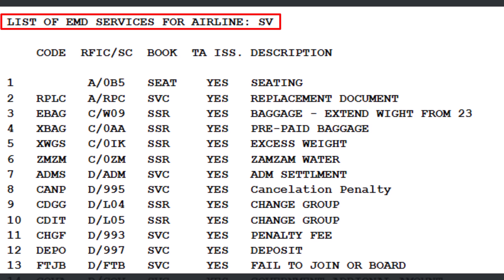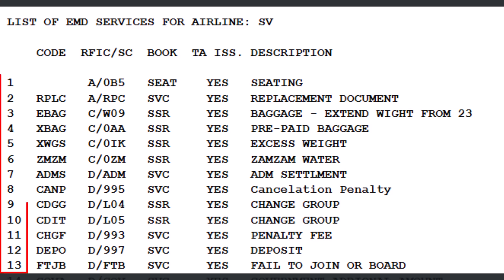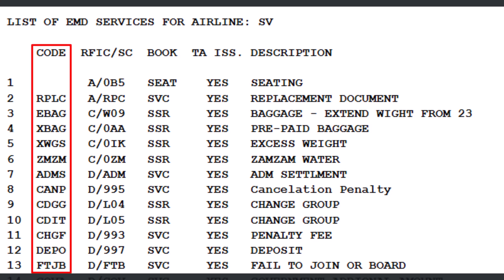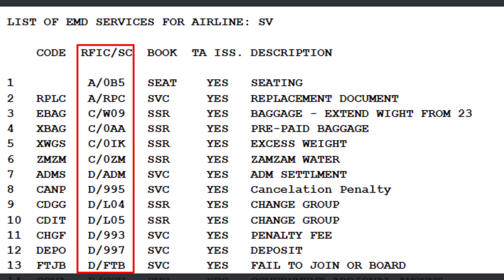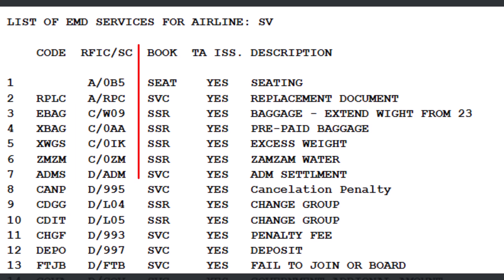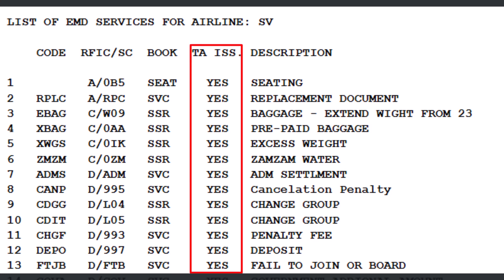Let's break down the columns you see on screen. First column: line numbers of the EMD services. Second column: four-letter EMD service code. Third column: reason for issuance code and subcode. Fourth column: booking method.